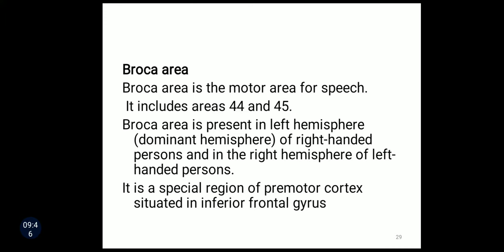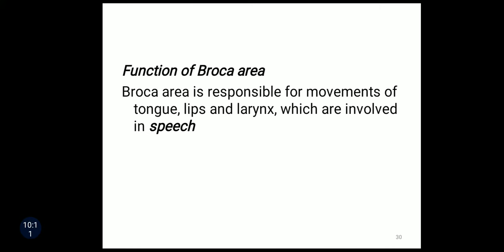Next is Broca's area, which is the motor area for speech. This area includes area number 44 and 45. Broca's area is present in the left hemisphere of right-handed persons and the right hemisphere of left-handed persons. It is a special region of premotor cortex situated in the inferior frontal gyrus. Broca's area is responsible for movements of the tongue, lips, and larynx which are involved in speech.